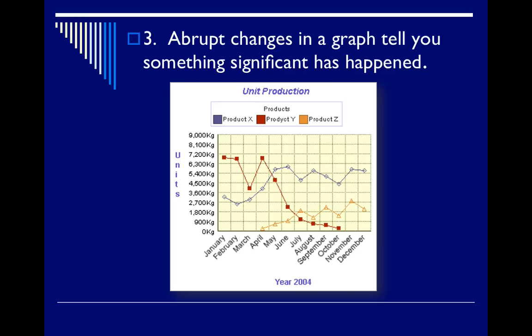Number three, abrupt changes in a graph tells you something significant has happened. So let's take a look at this graph here. It's a little bit different. It's about unit production.